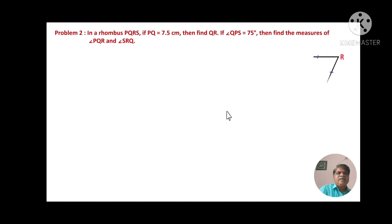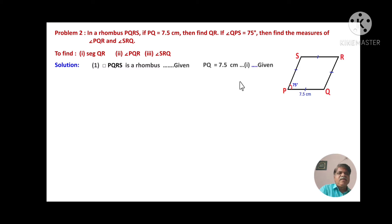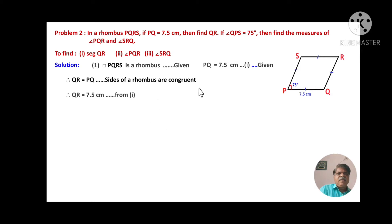Problem number 2: Rhombus PQRS — PQ is 7.5 centimeters, find QR. If angle QPS is 75 degrees, then find the measures of angle PQR and angle SRQ. We have to find segment QR, angle PQR, and angle SRQ. Quadrilateral PQRS is a rhombus — given. PQ equals 7.5 centimeters — equation 1, given. Therefore QR equals PQ, since all sides of a rhombus are congruent. From equation 1, QR equals 7.5 centimeters.